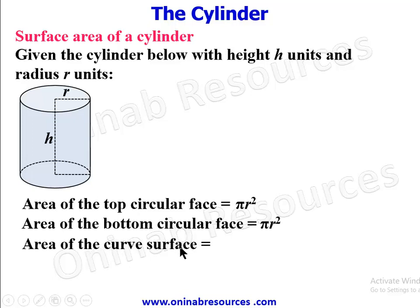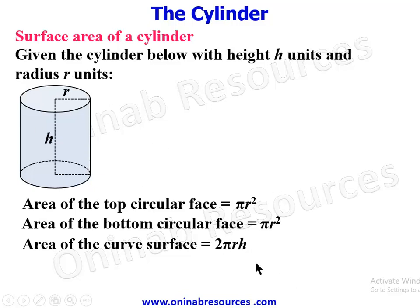The rectangle represents the curved surface of the cylinder. To calculate the area of the rectangle, which represents the area of the curved surface, the length of the rectangle is the circumference of the circle, which is 2πr, multiplied by the breadth of the rectangle, which is the height of the cylinder, giving us 2πrh.